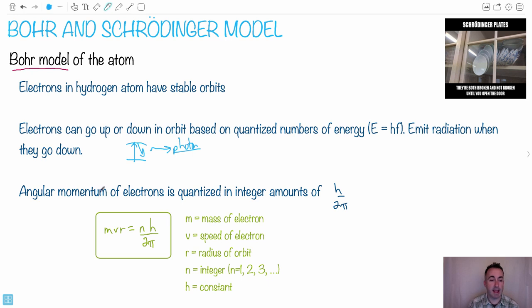Now the other thing he said was this: the angular momentum of the electrons is quantized in integer amounts of h over 2π. So what does this mean? This is actually an equation on your data booklet. I haven't seen them really use it much on exams, but it's in the syllabus. So I wouldn't be surprised if this shows up, at least in an easy way to explain it.